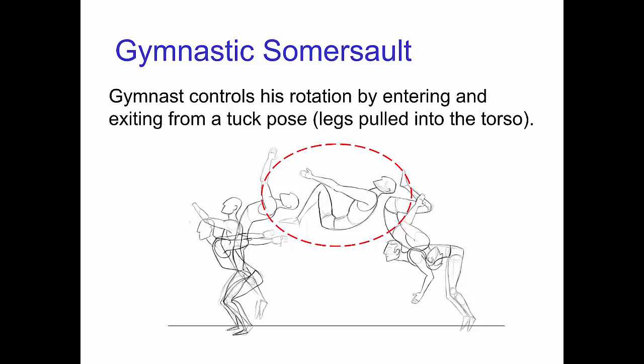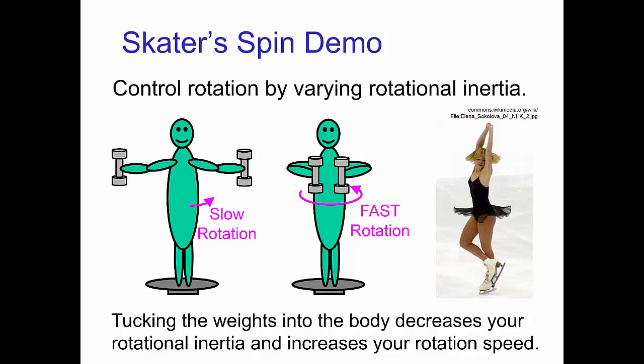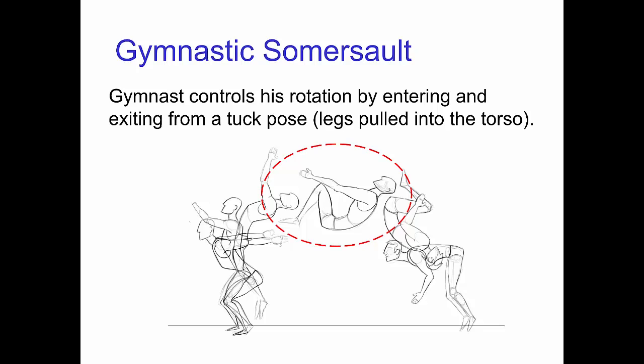For example, a gymnast controls his rotation by entering and exiting from a tuck, which is a pose where the legs are pulled into the torso. The rotation varies with pose because changing the pose changes the character's rotational inertia.